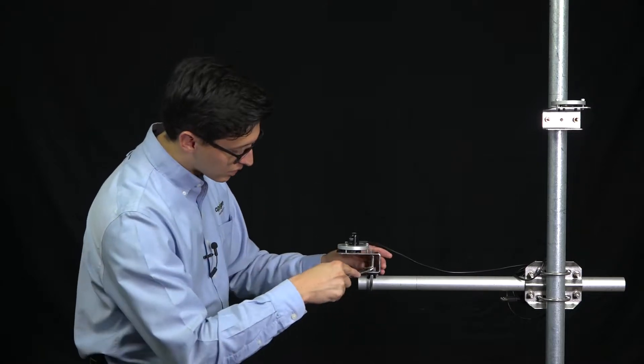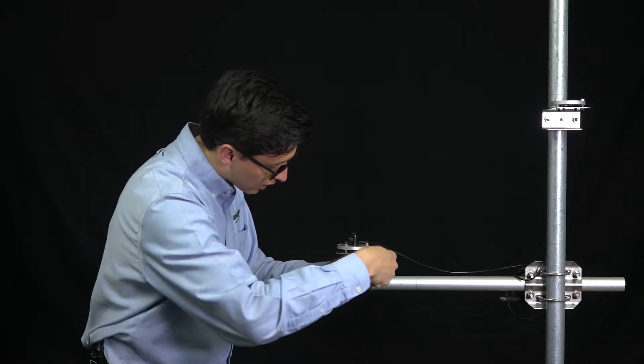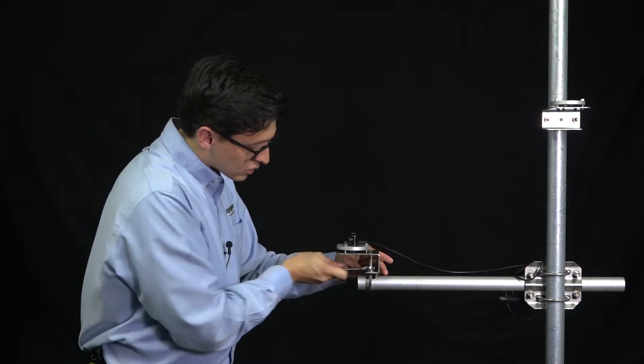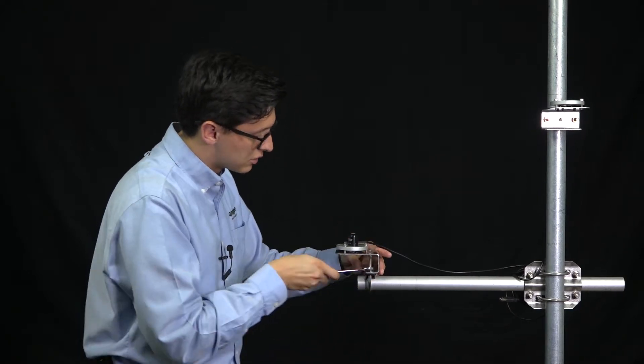Then take a half inch crescent wrench and further tighten this down so that it fits firmly and snugly to your cross arm.